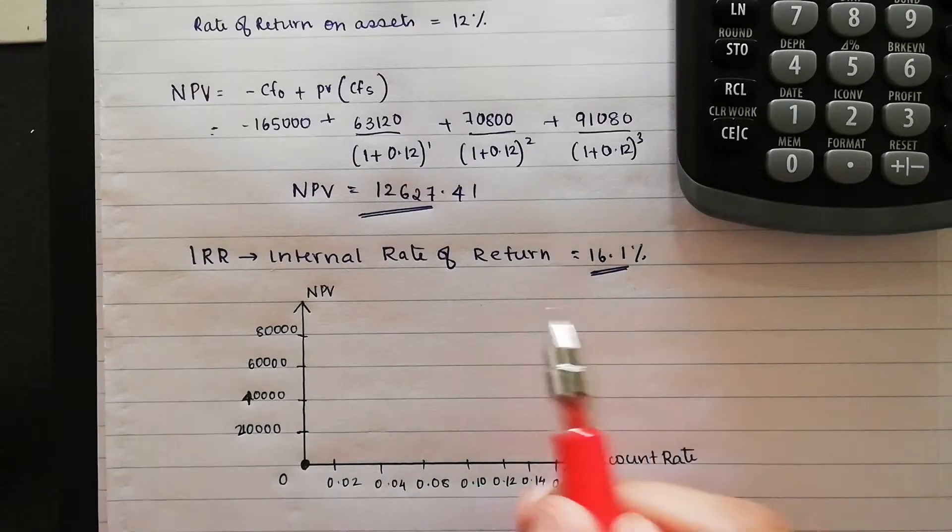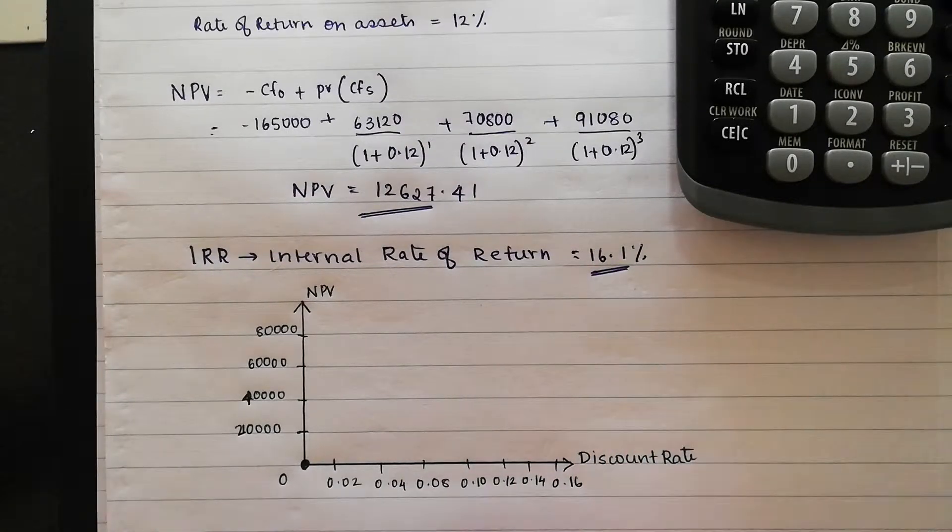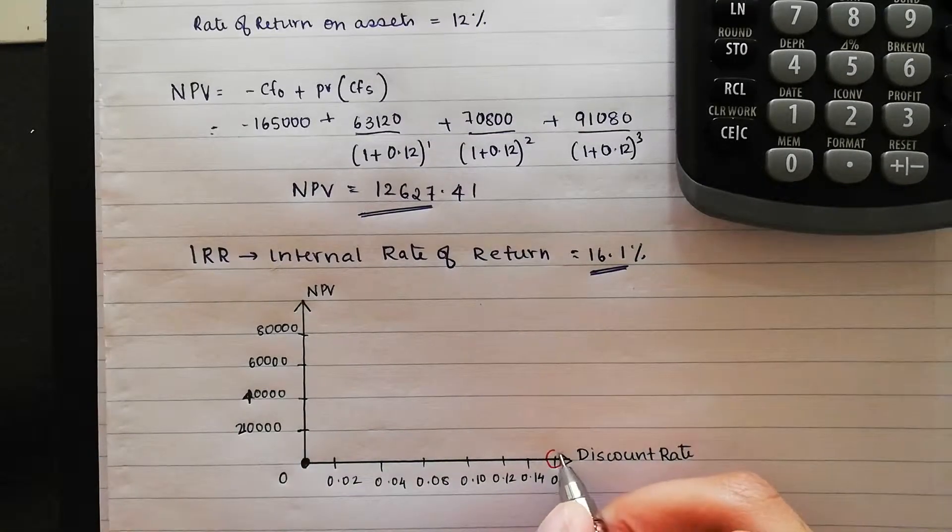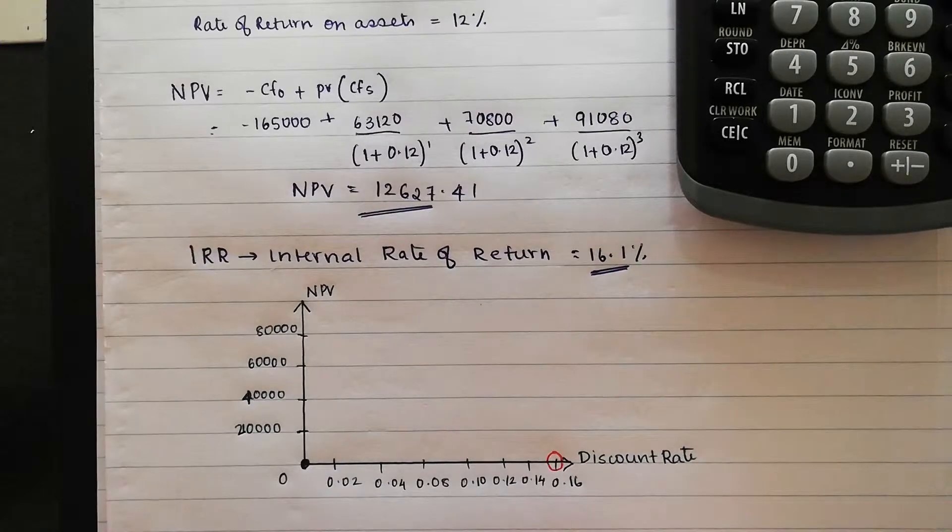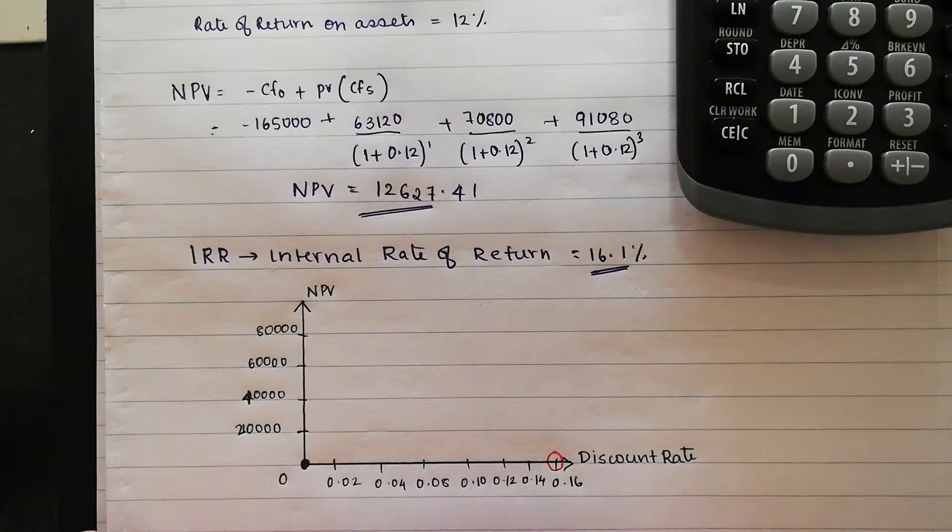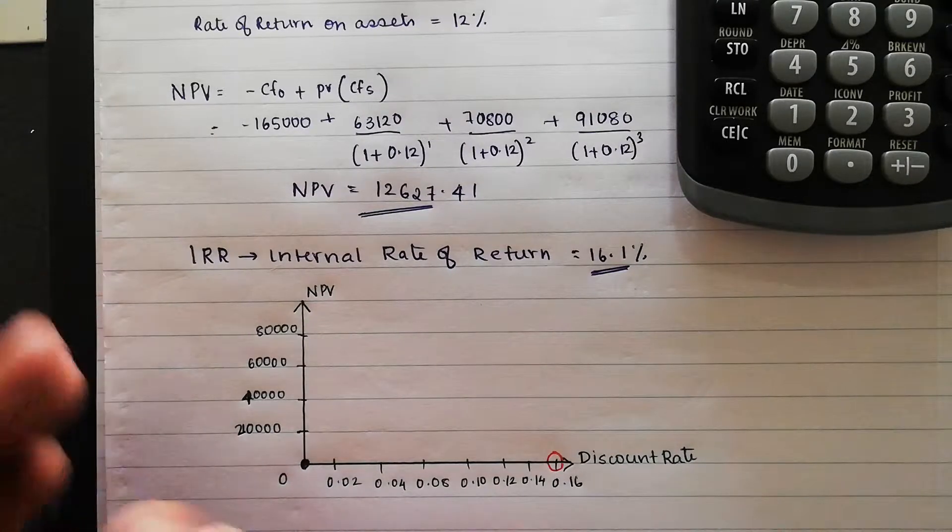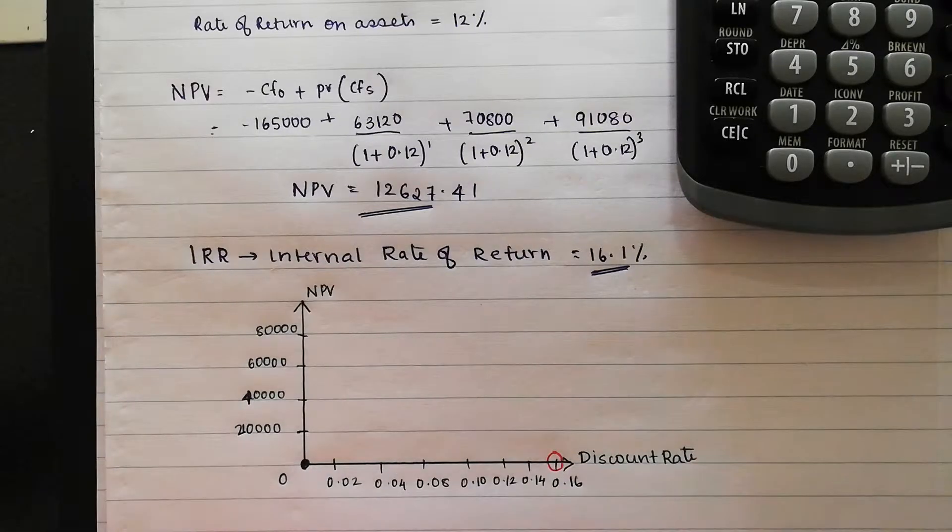So from our previous video, we found out the internal rate of return is 16.1%. And that's going to be over here, right? So like I stated before, IRR is when the NPV is equal to 0. So what is the NPV when the IRR is equal to 0? How do we calculate that?